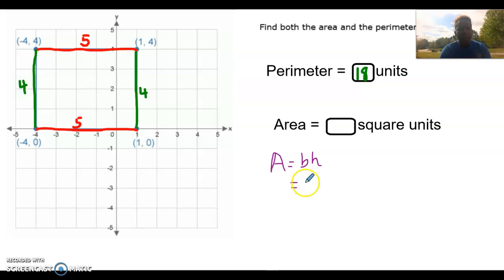What is our base? Our base is five. And our height is four. So we're going to multiply those two units of measure. We have five times four gives us 20. And we're talking about area, which is two-dimensional, so it is 20 square units.